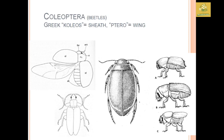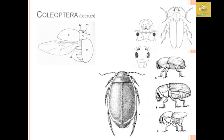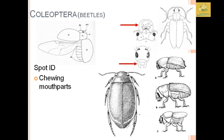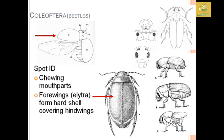Coleoptera also comes from the Greek words 'koleos' and 'ptera' meaning wings, as mentioned earlier. Coleoptera is mainly composed of beetles. They have chewing mouthparts and the forewings are called elytra, which form a hard shell covering the hind wings from external damage.